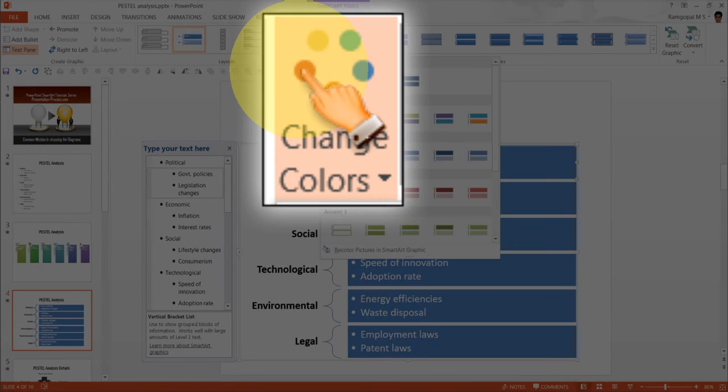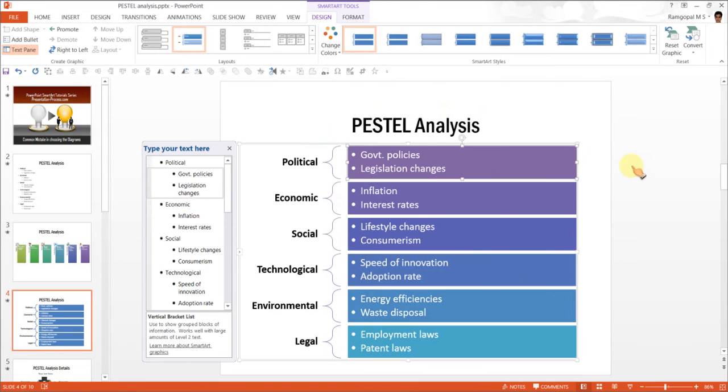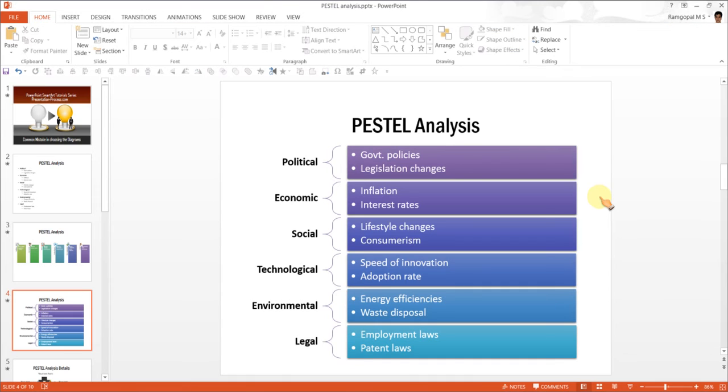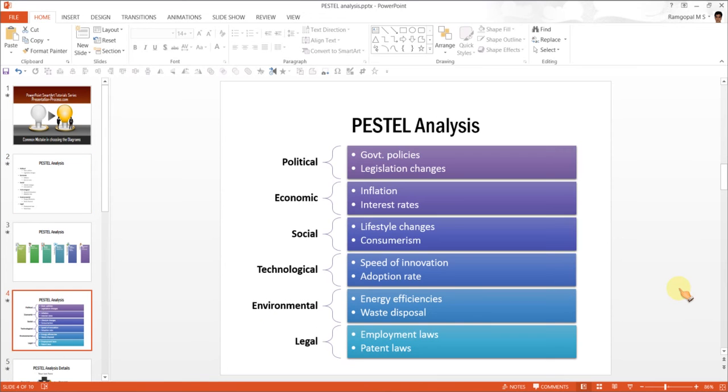If you want to make this diagram look even more beautiful, go to change colors and under colorful option, choose the one that seems to appeal to you more. And then go to one of the SmartArt styles and make the diagram look very beautiful. So we converted this busy looking text-based slide into this interesting looking PESTEL analysis diagram slide.